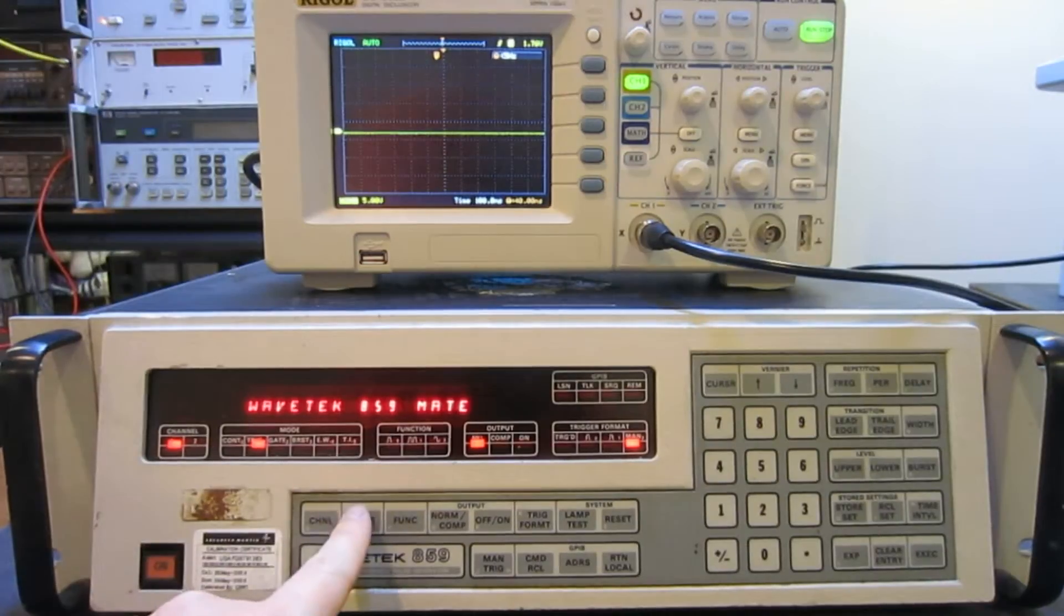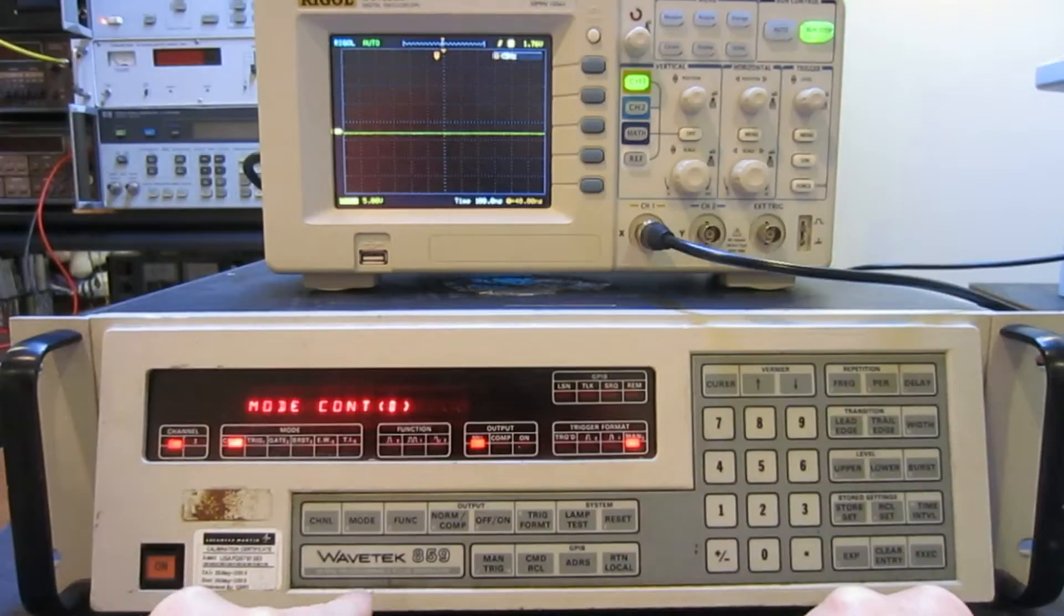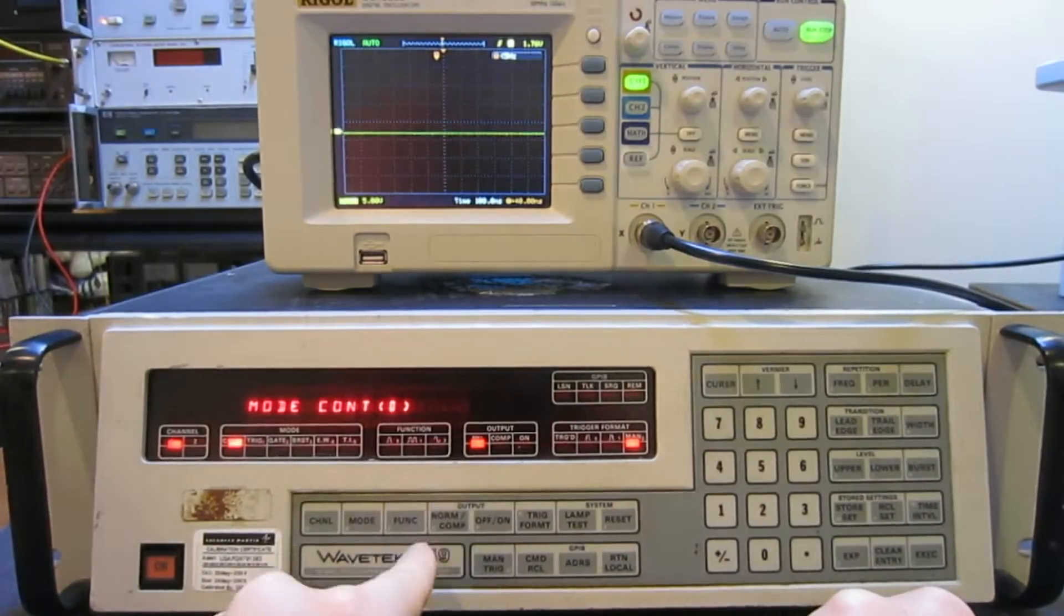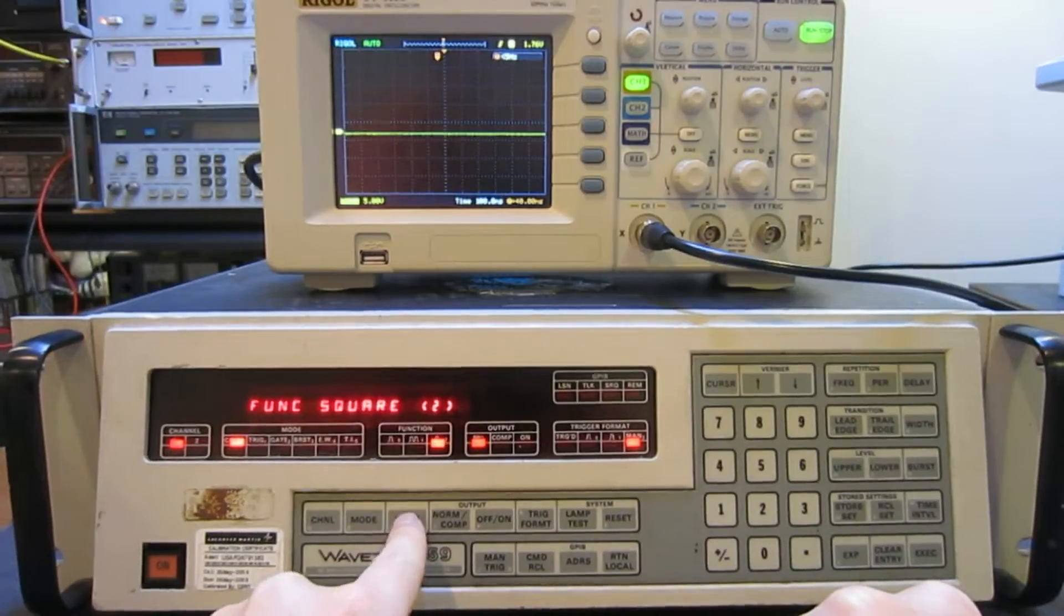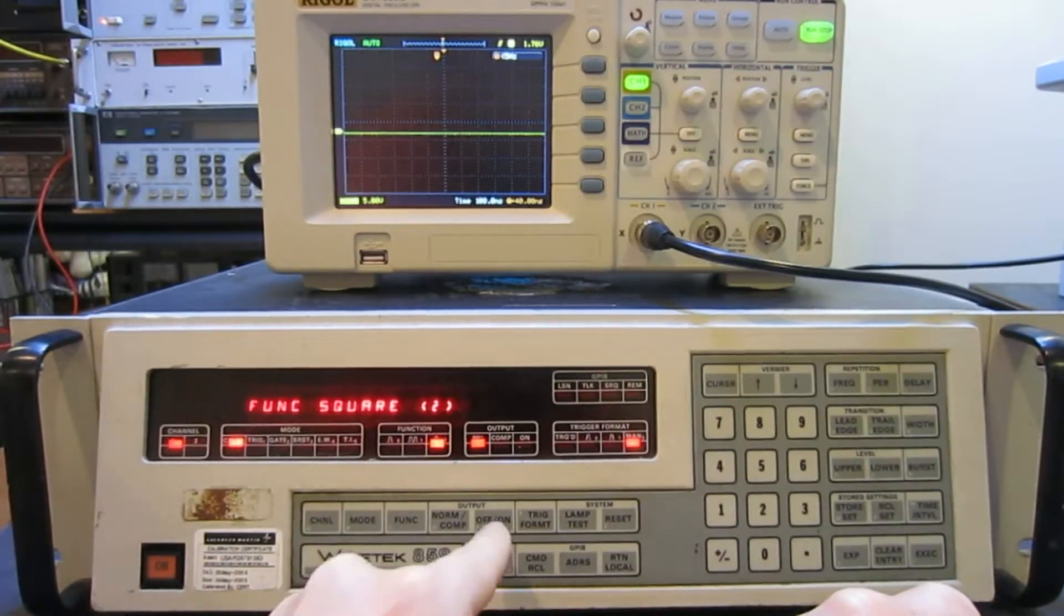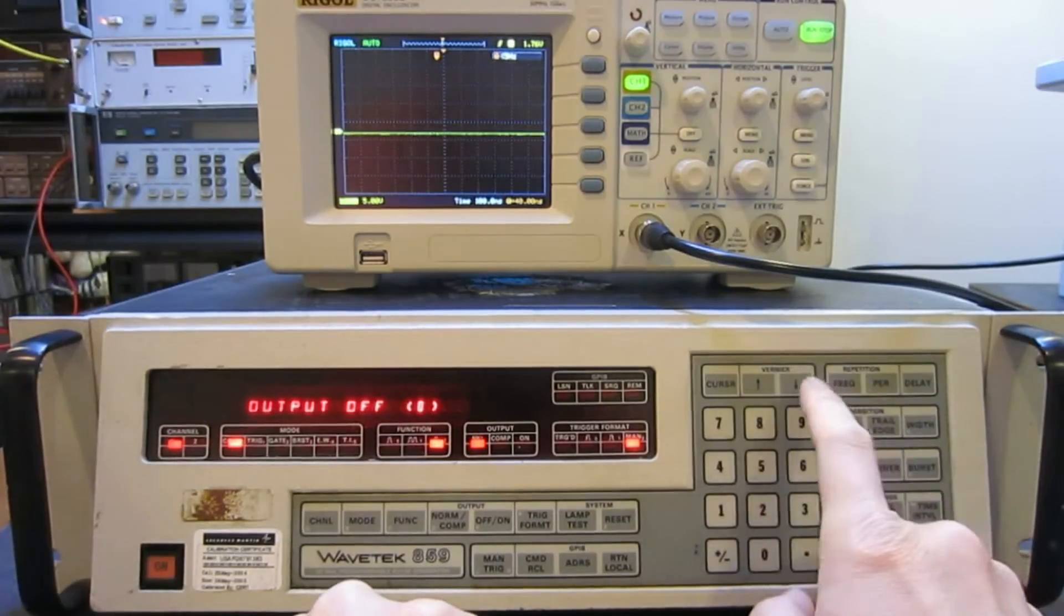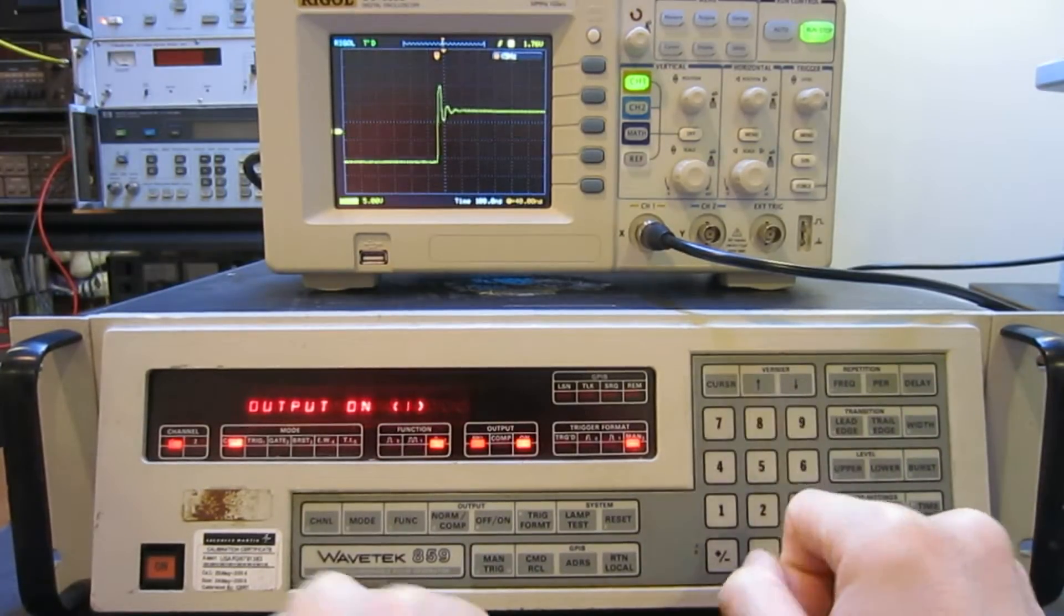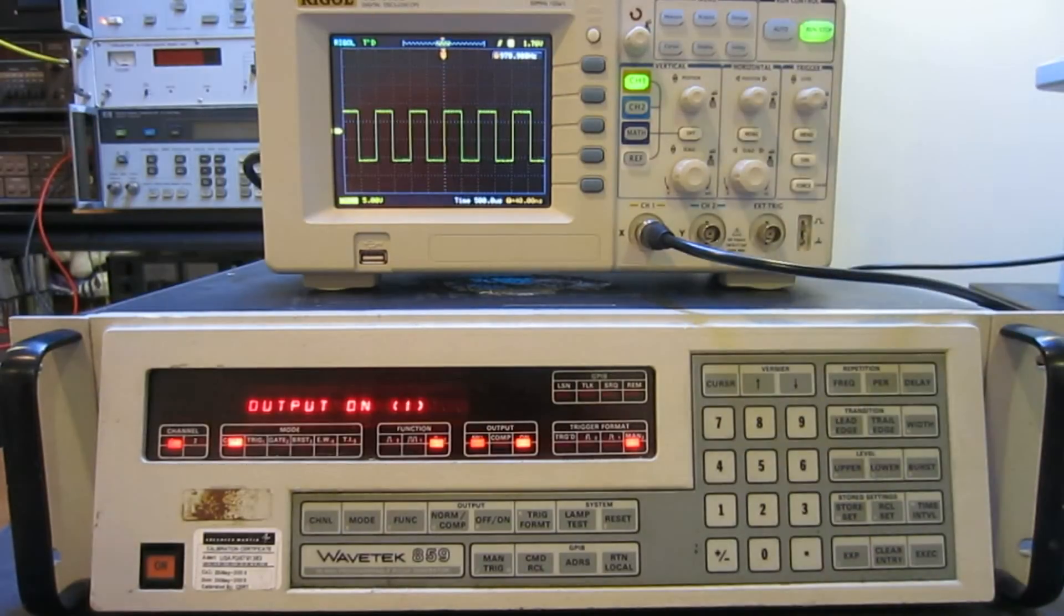Right now after power on, it defaults to output channels off and default to the trigger mode. We want to set to continuous mode and we want a function to be number two, which is the continuous square wave. Output, we want to turn it on, so output on-off and use a Vernier to turn it on.